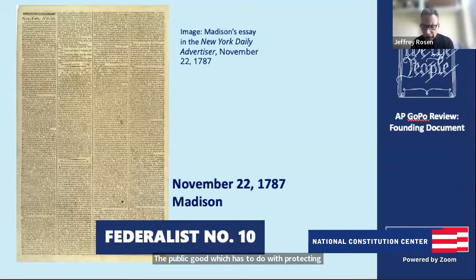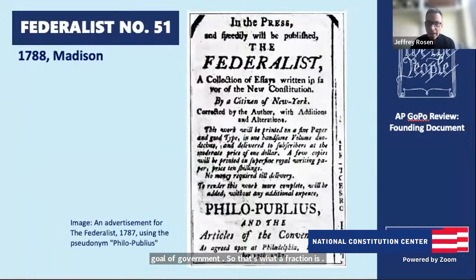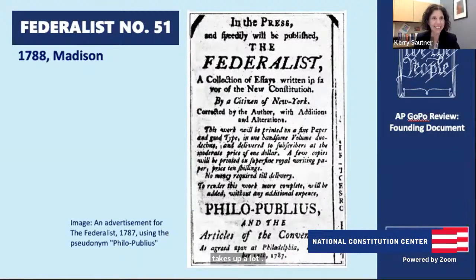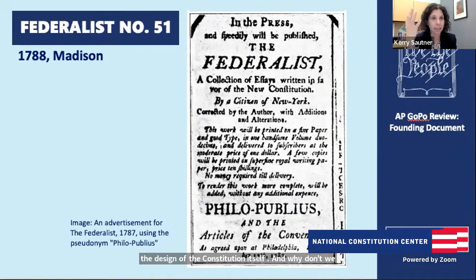That's what a faction is, and Madison's solution to the problem of faction is what takes up a lot of the rest of the Federalist Papers — that's the design of the Constitution itself. That leads perfectly to talking about the design of the Constitution in terms of separation of powers and checks and balances in Federalist 51 — that will be the remedy for tyranny.